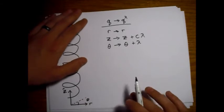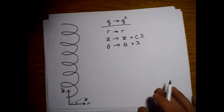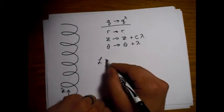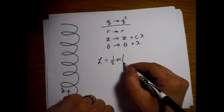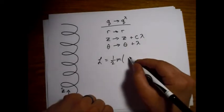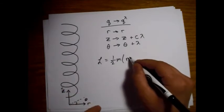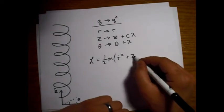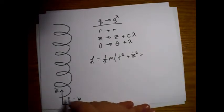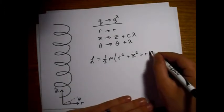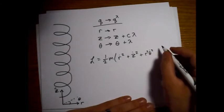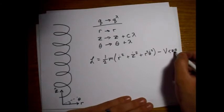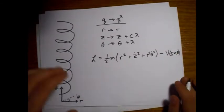So let's go ahead and just write the Lagrangian. We have one-half m and then we have our velocities here. So we'll have r dot squared for the r velocity, we'll have z dot squared, and then for circumferential velocity we have r theta dot, and these are both squared. So there we go.